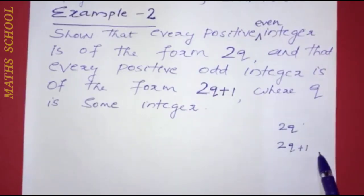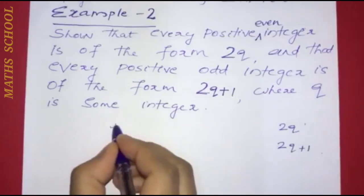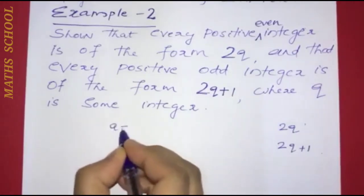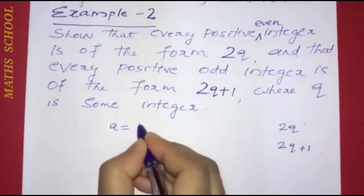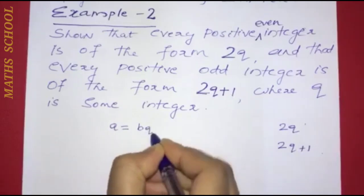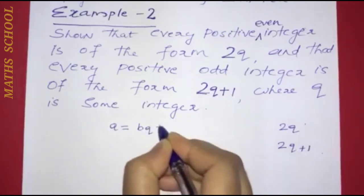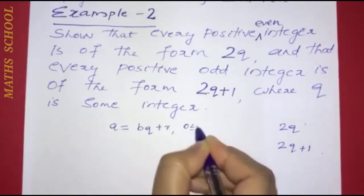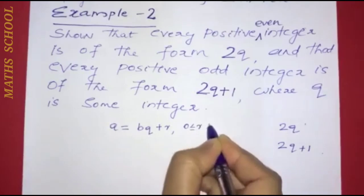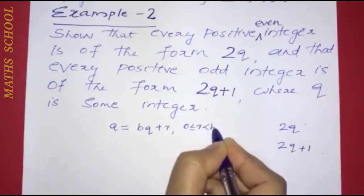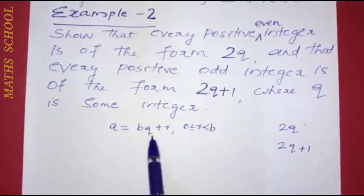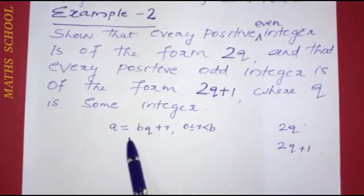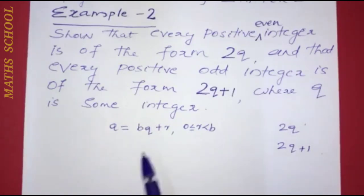Now let's learn how to divide a number using Euclid's division. We use a equals bq plus r, where 0 is less than or equal to r, which is less than b.